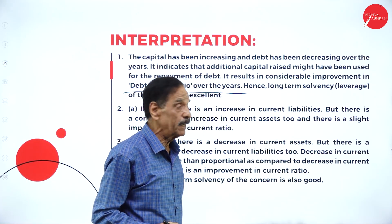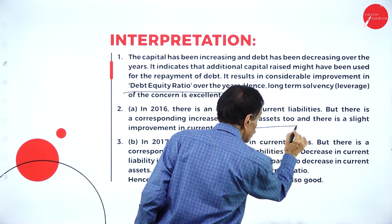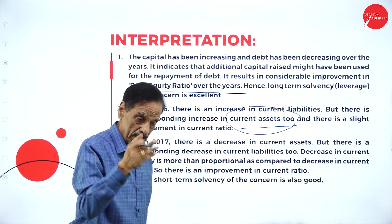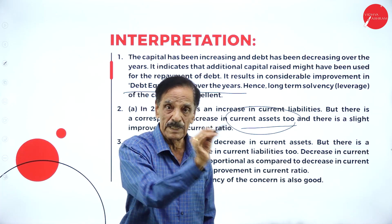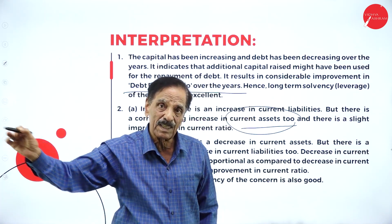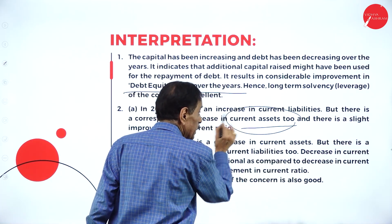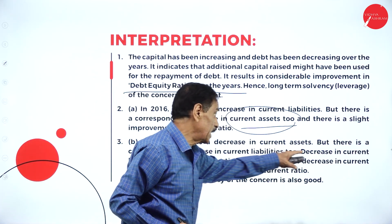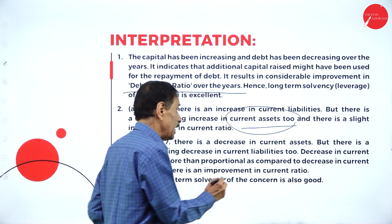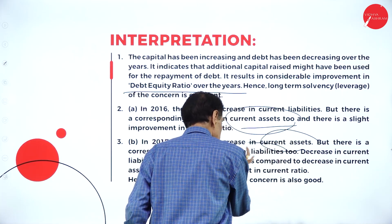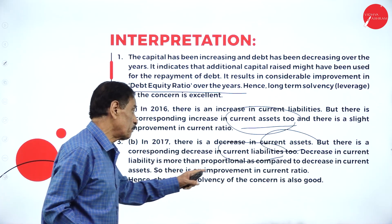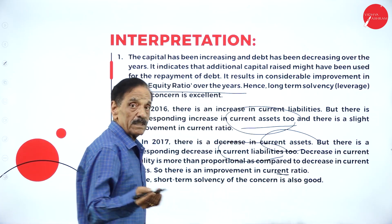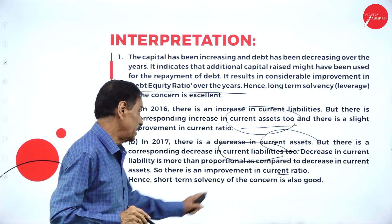In 2016, there is an increase in current liabilities but there is a corresponding increase in current assets too, and there is a slight improvement in current ratio because current assets also increase. Current ratio equals current assets divided by current liabilities. In 2017, there is a decrease in current assets but there is a corresponding decrease in current liabilities also.